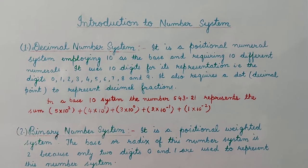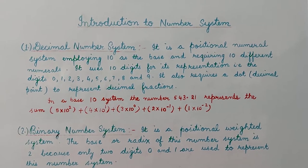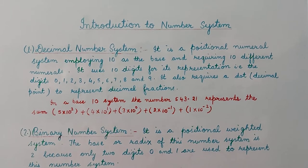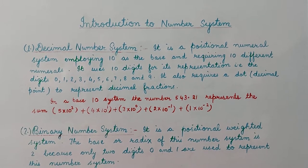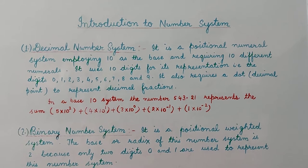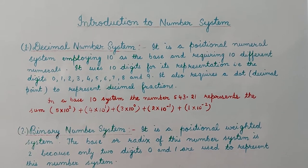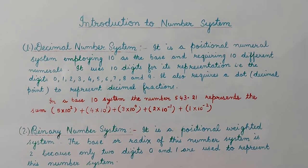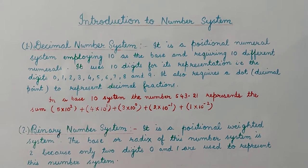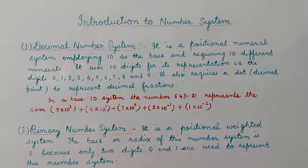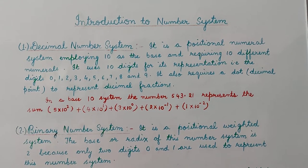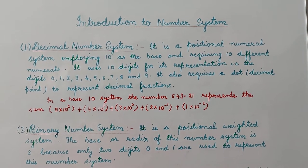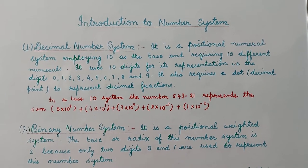This is because the positional value of 5 is 100, that is 10 to the power 2. Similarly, the positional value of 4 is 10 to the power 1, the positional value of 3 is 10 to the power 0, the position of 2 is 10 to the power minus 1, and the position of 1 is 10 to the power minus 2.